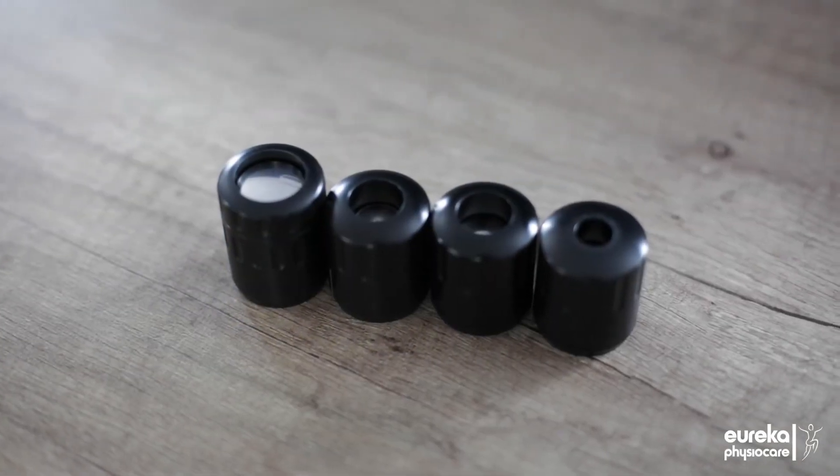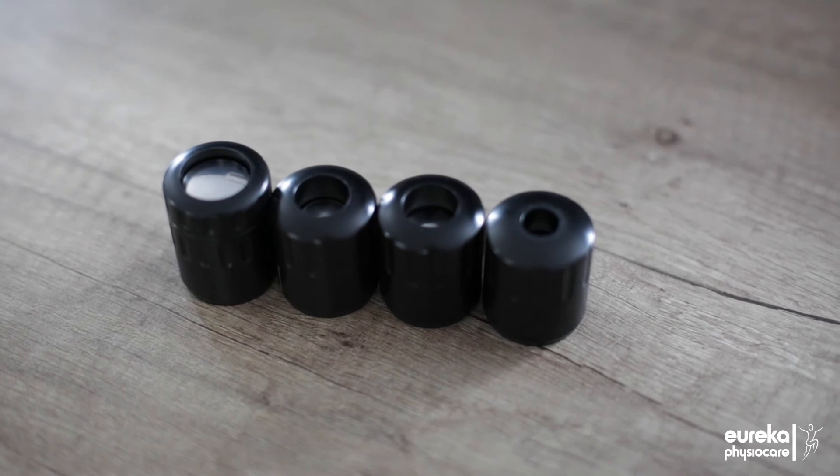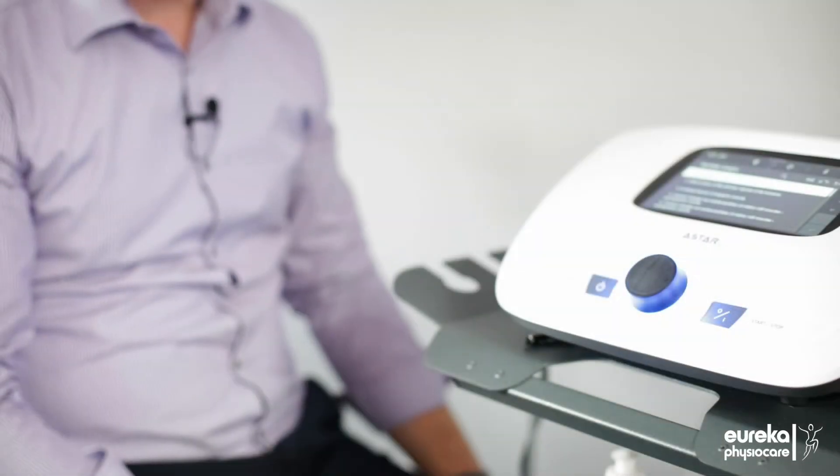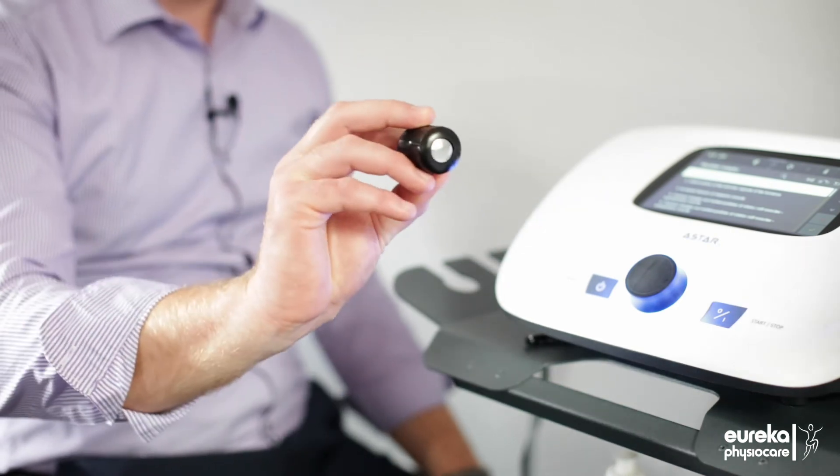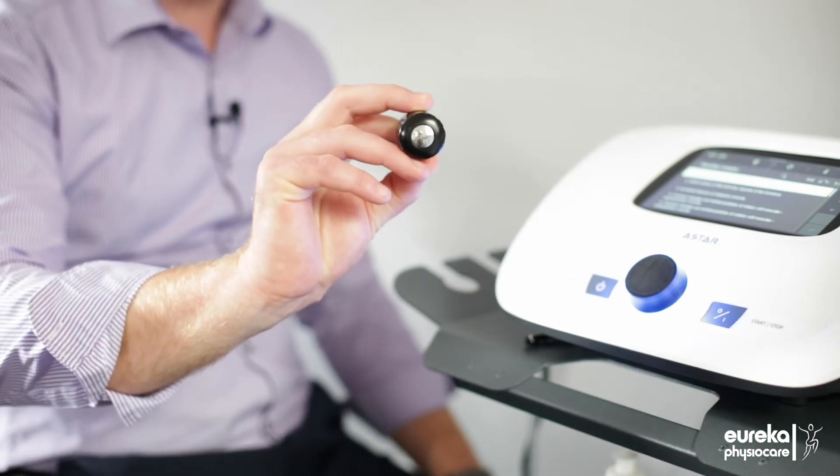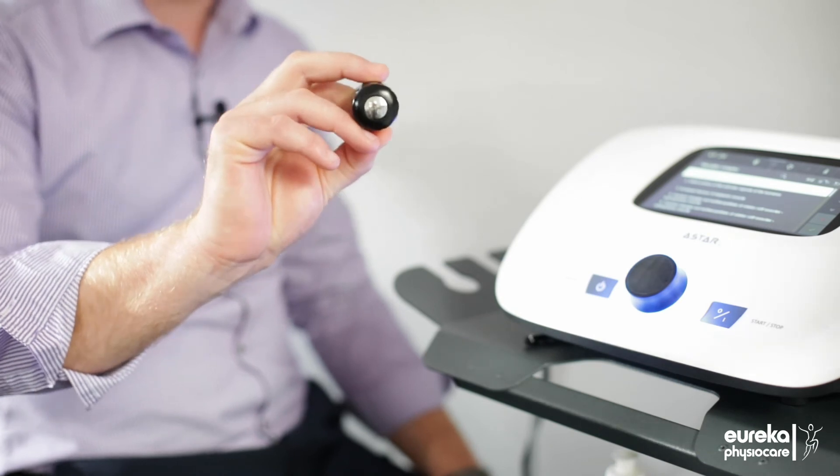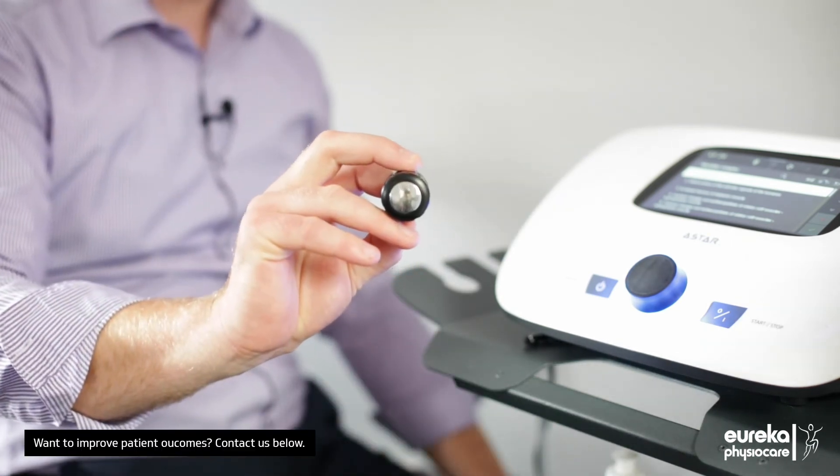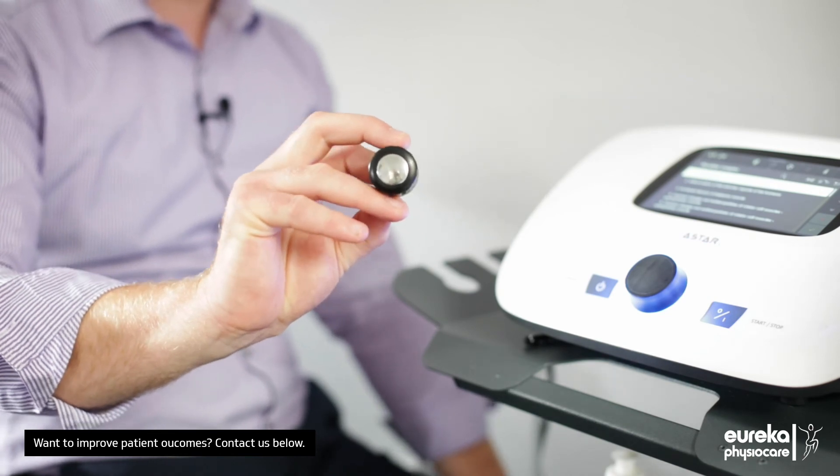The unit comes with four different applicator heads, which means that you can widen your portfolio of treatments. The most common is the 15mm radial head, which is the most common applicator to be used for most treatments. You also have a 20mm deactor head, which is used for more deep seated muscles.